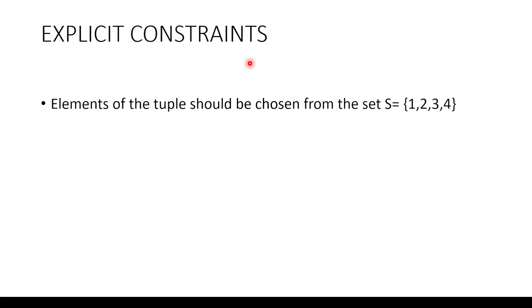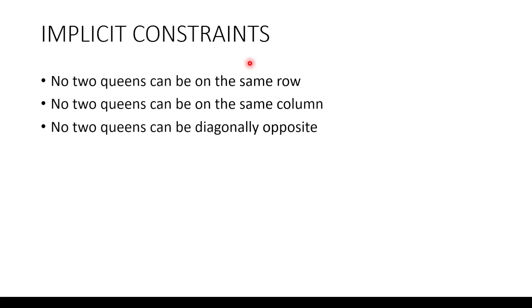We will define the explicit constraints: elements of the tuple should be chosen from the set S = {1, 2, 3, 4}. The implicit constraints are: no 2 queens can be on the same row, no 2 queens can be on the same column, and no 2 queens can be diagonally opposite.